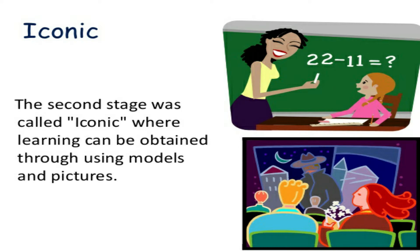The iconic stage appears from 1 to 6 years old. This stage involves an internal representation of external objects visually in the form of a mental image or icon. For example, a child drawing an image of a tree or thinking of an image of a tree would be representative of this stage.